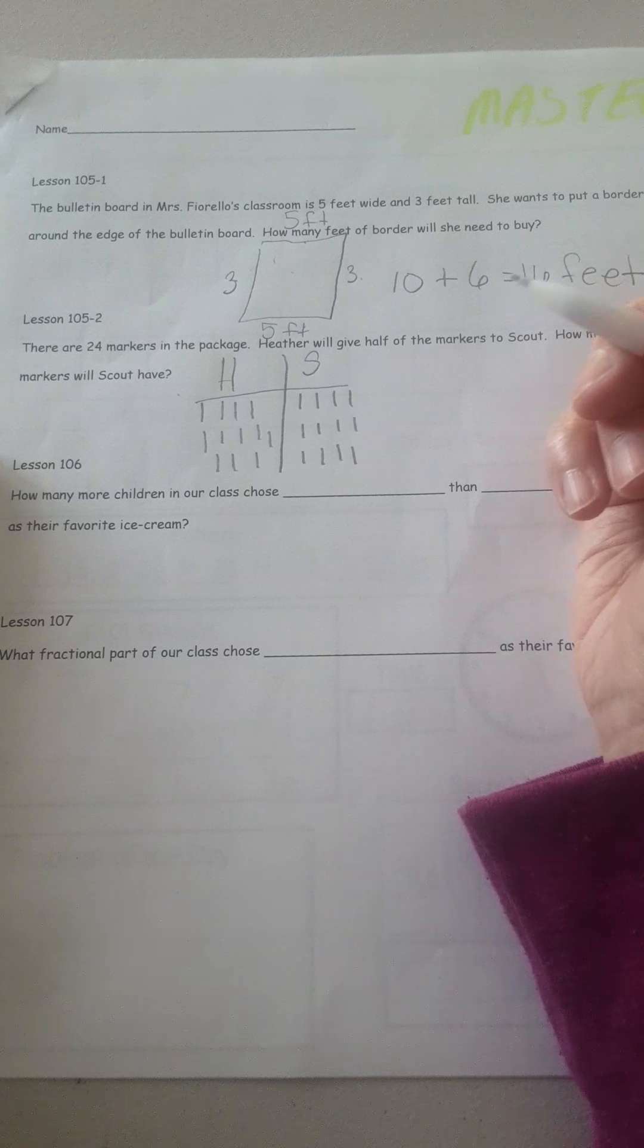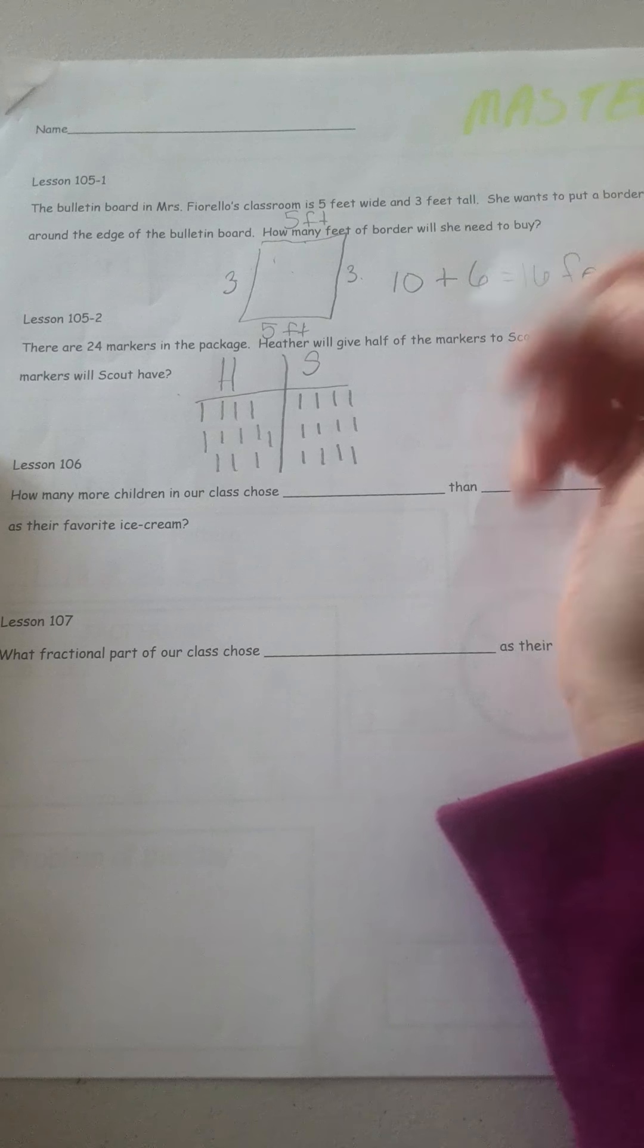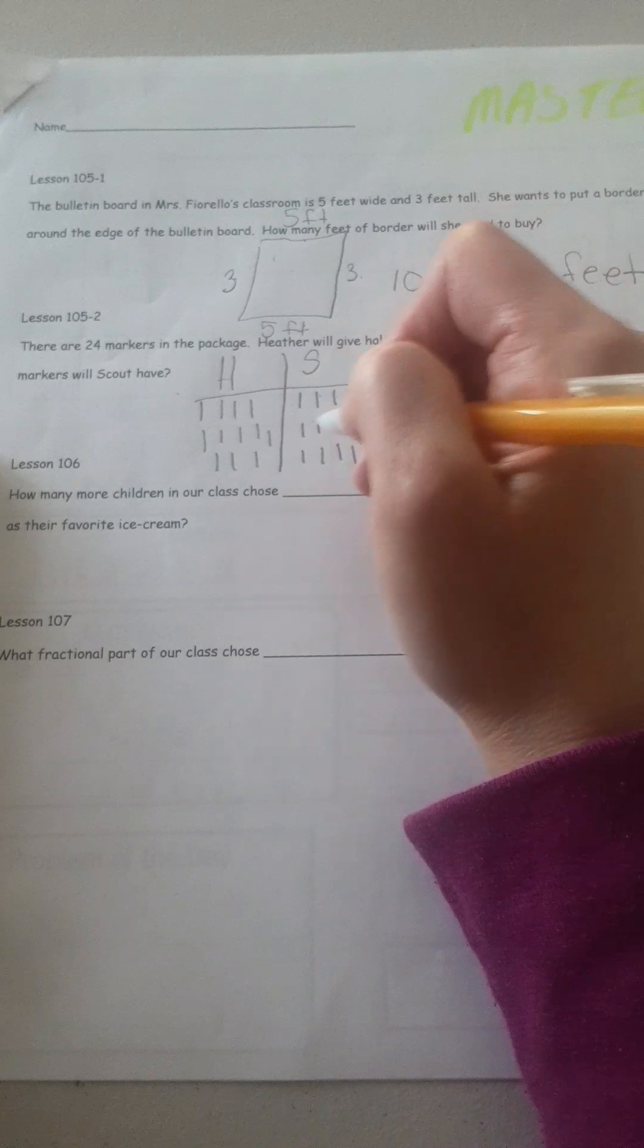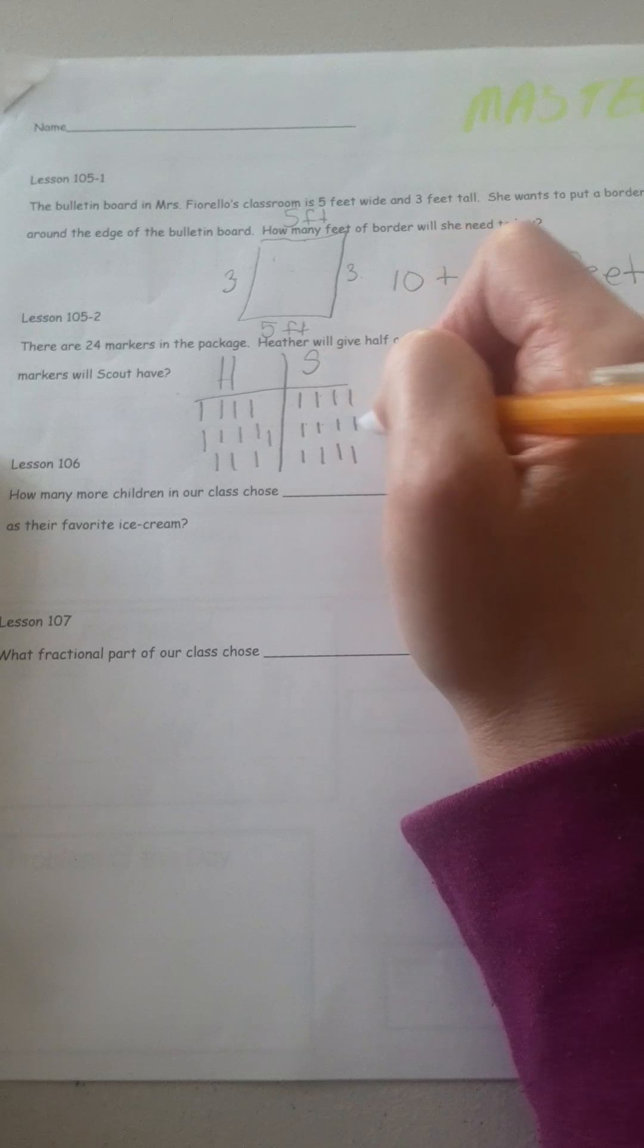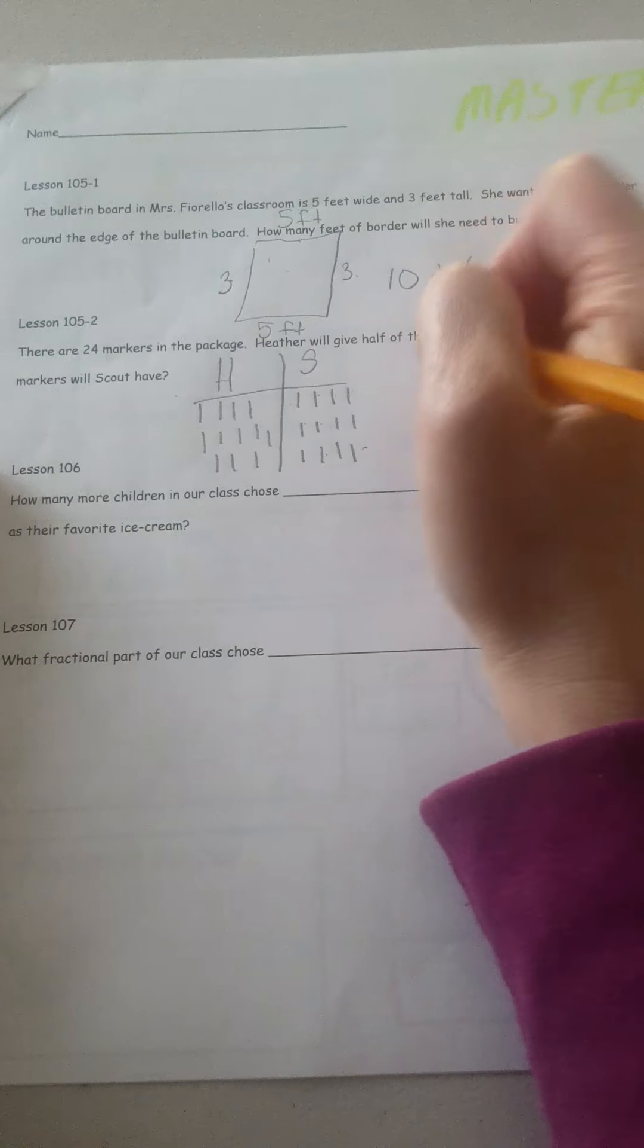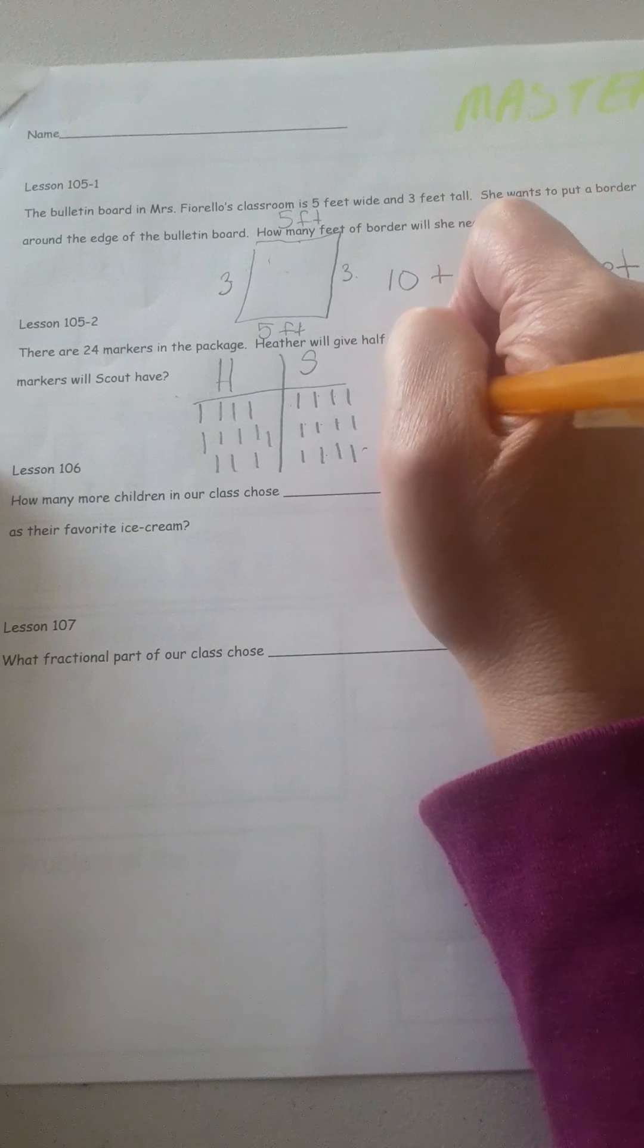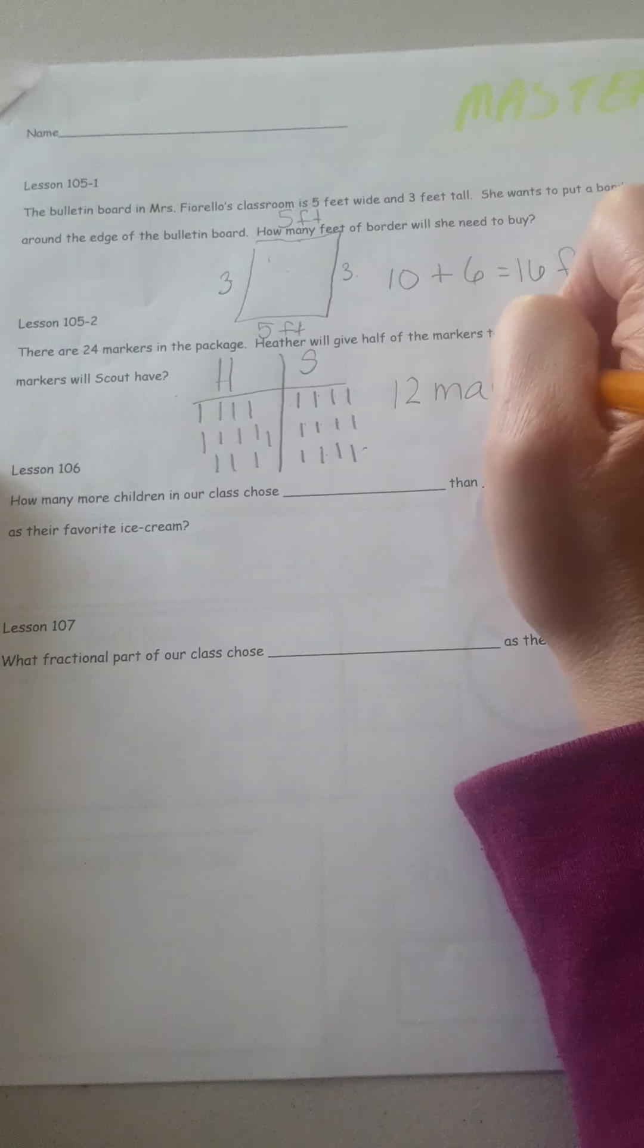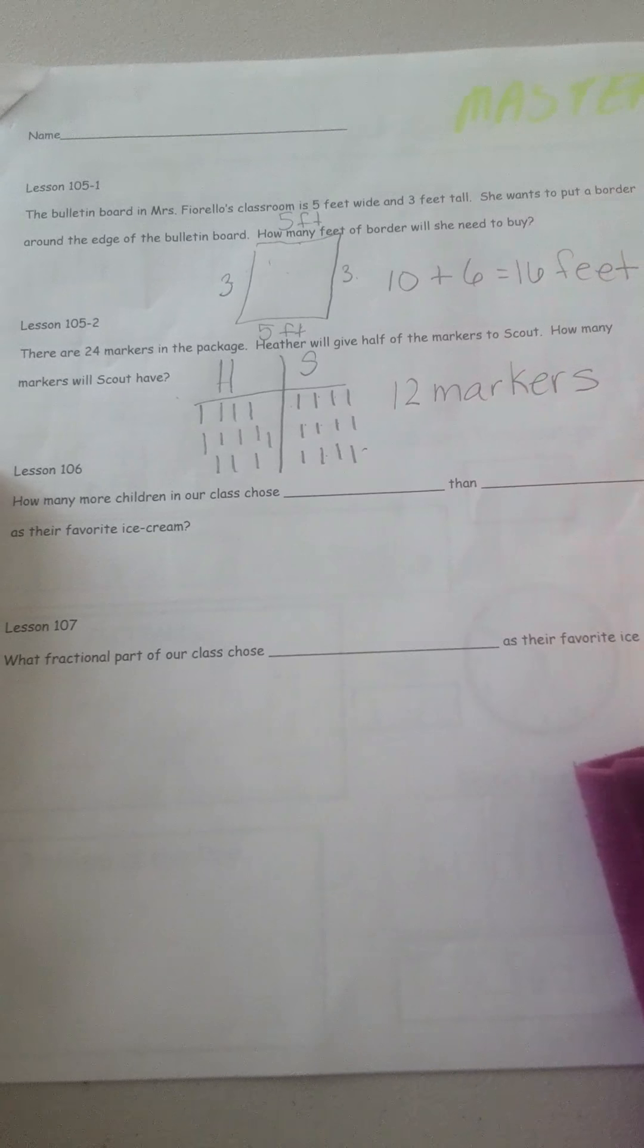So there's our 24 markers. And let's see how many Scout will have. 1, 2, 3, 4, 5, 6, 7, 8, 9, 10, 11, 12. 12 markers.